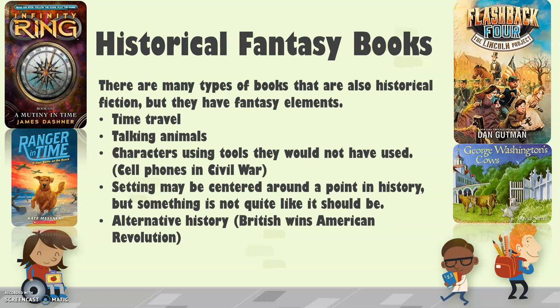The setting might be centered around a point in history, but something is not quite like it should be. Ranger in Time is a time-traveling dog — that's certainly something that wouldn't happen. The Infinity Ring is about a group of kids who have a magical ring that allows them to go to different time periods to solve mysteries. Time travel is not something we can do currently — maybe someday! George Washington's Cows is a cute picture book about Mount Vernon, Washington's real home, but it's about how his cows wore dresses and his pigs went to college — obviously that didn't happen.